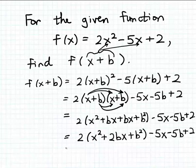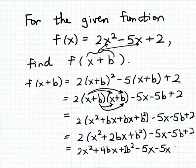And now let's multiply through here by this coefficient of 2 outside the parentheses. So we get 2x squared plus 4bx plus 2b squared and then minus 5x minus 5b and then plus 2.